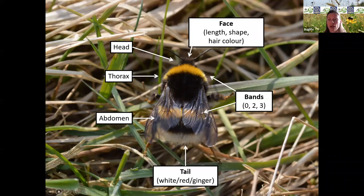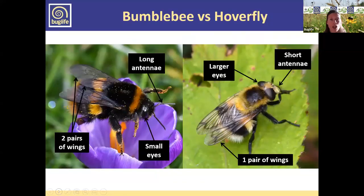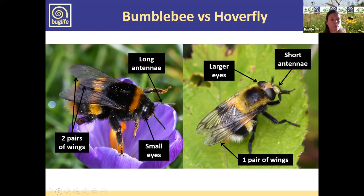How do we know whether we've actually got a bumblebee? There are some bumblebee lookalikes out there. Here we've got a bumblebee on the left and a hoverfly on the right — the hoverfly is a very good mimic of our bumblebee as a defensive mechanism. The things we're looking out for: bees have two pairs of wings whereas hoverflies, like all flies, have just one pair of wings.